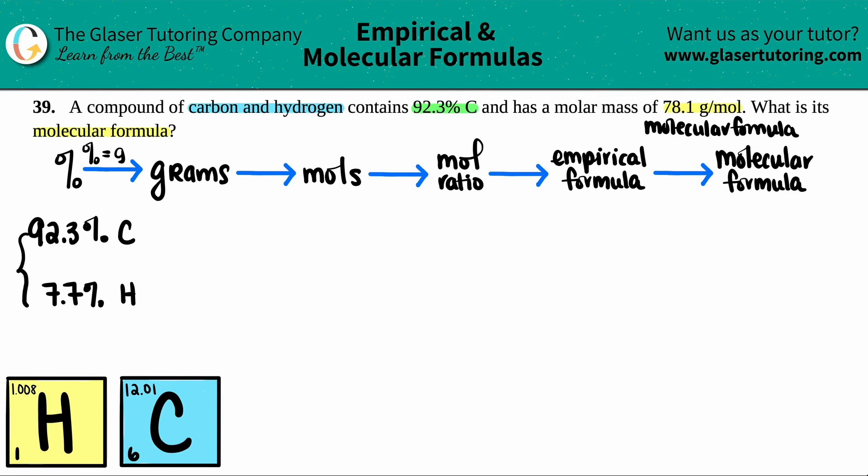This will tell us that whatever the percentage was actually equals the amount of grams. Because if I add this up in terms of grams, I would get 100 grams, 100%, 100 grams. So the percentages are the same. This equals 92.3 grams of carbon and this equals 7.7 grams of hydrogen. And the first step is done. Look how easy that was.